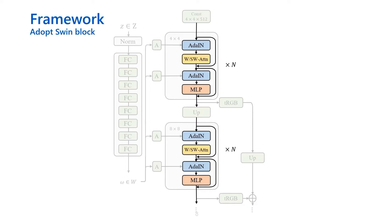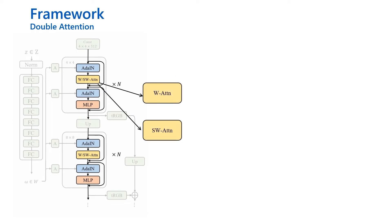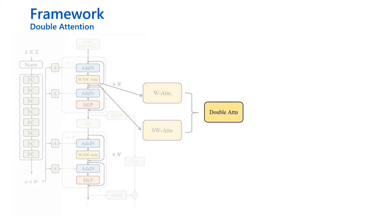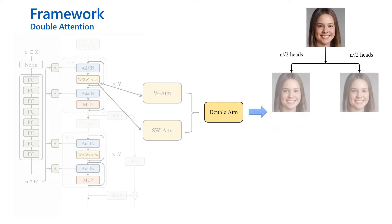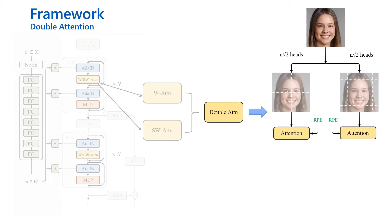Just replacing the Conv2D with Swin blocks could not achieve satisfactory performance. So we further introduce Double Attention to strengthen the model's capability. Using local attention alone sacrifices the ability to model long-range dependency. To achieve an enlarged receptive field, we propose Double Attention, which allows a single transformer block to simultaneously attend to the context of local and shifted windows. As shown in the figure, we split the heads into two groups: the first half performs regular window attention, while the others compute shifted window attention. Both results are concatenated to form the final output.